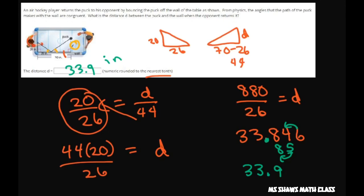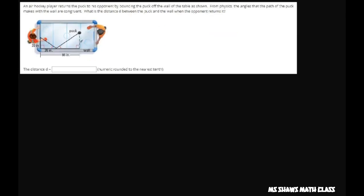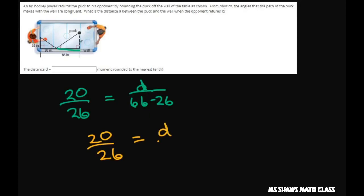And we have a similar one. So we're going to do the same thing. We're going to have 20 is to 26 as D is to 66 minus 26, because we just want this length to set up the proportion. So 20 divided by 26 equals D divided by 40, and cross multiply.